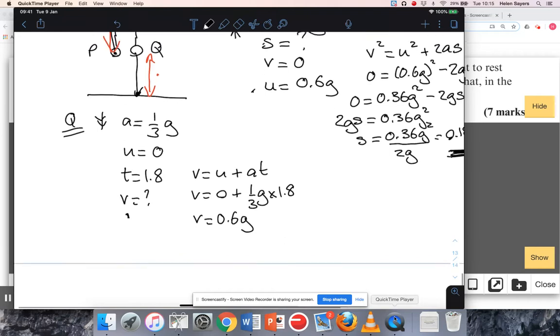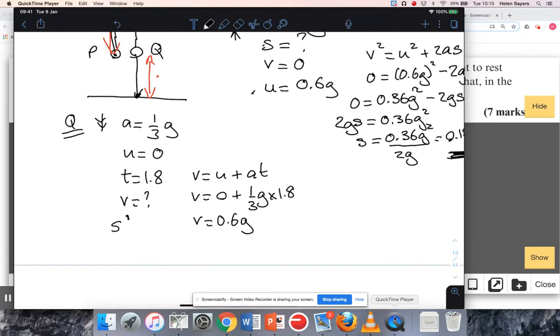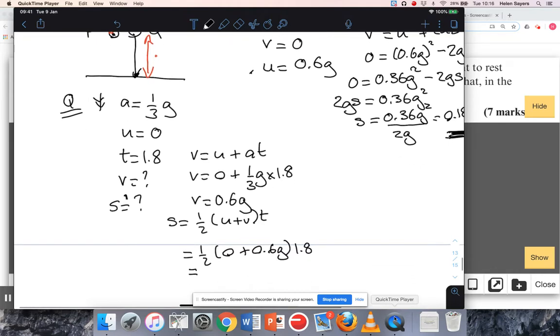However far Q travels downwards, P will travel that distance upwards, so let's find that distance. I'll go back to these calculations here. Basically, I want to find how far Q travels in that time. I'm going to use s equals a half u plus v times t. That's going to be a half times naught plus 0.6g times t, which is 1.8, so that's going to be a half times 0.6 times 1.8g, so that's 27 over 50g or 0.54g.